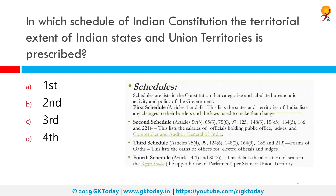In which schedule of the Indian Constitution is the territorial extent of Indian states and union territories prescribed? The correct answer is the First Schedule. The First Schedule lists the states and territories of India, along with any changes to their borders and the laws used to make that change.